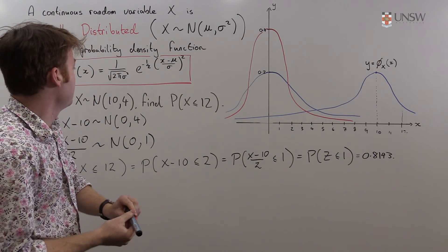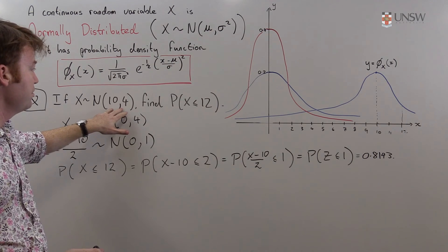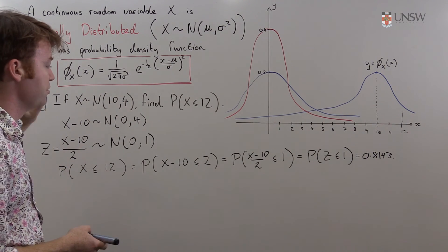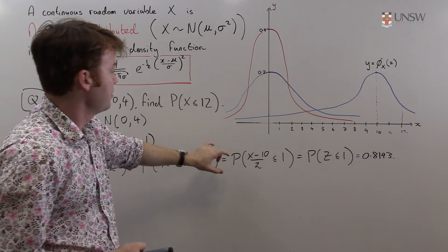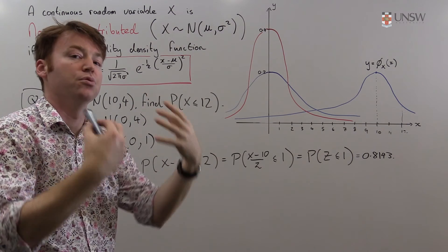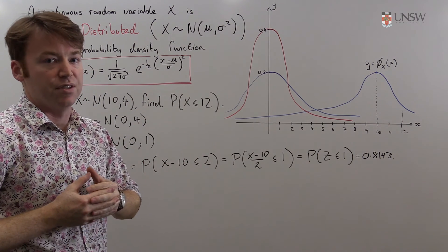So to summarize we have a normal distribution with some strange variance and expected value and we have to convert it into a variance of 1 and an expected value of 0 in order to be able to look up our values in the table.